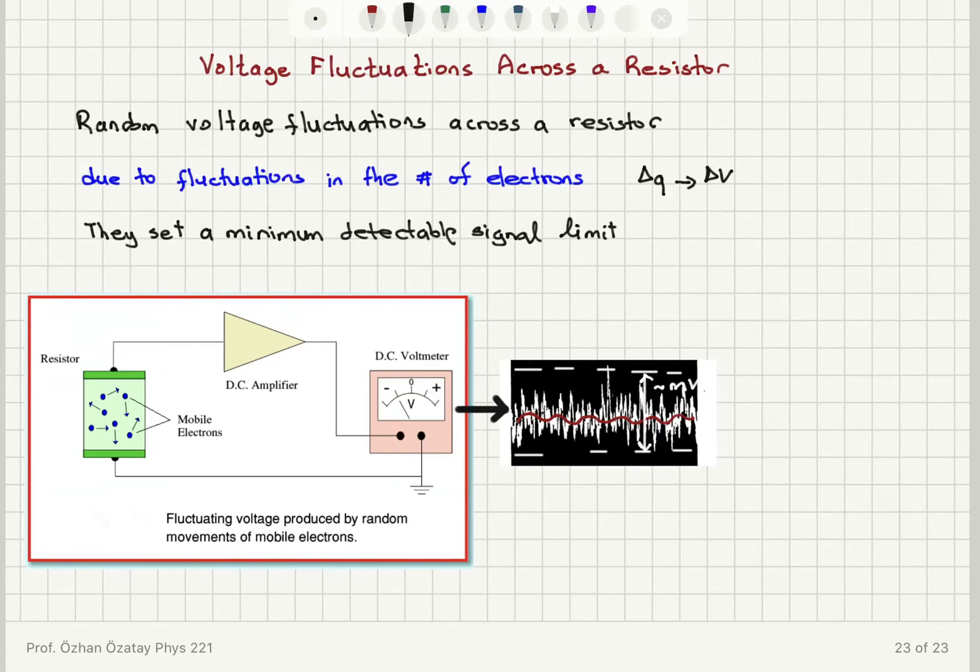Then what will happen? It will be difficult to measure a signal of the order of microvolts. So delta V fluctuation amplitude is of the order of millivolts, then a microvolt signal is difficult to measure.